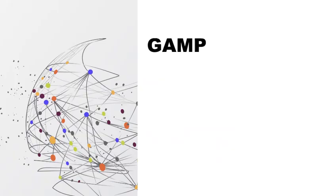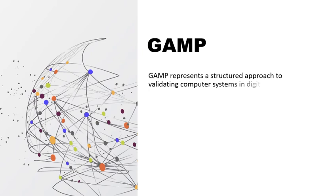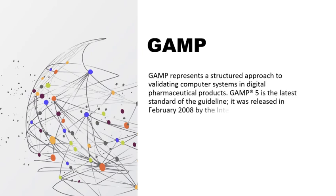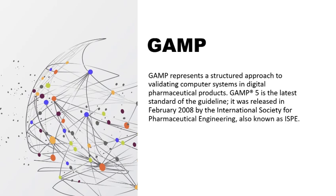First, we will discuss what is GAMP. GAMP represents a structured approach to validating computer systems in pharmaceutical products. GAMP5 is the latest standard of the guidance and it was released in February 2008 by the International Society for Pharmaceutical Engineering, which is also known as ISPE. Whenever we procure an automated system in the pharmaceutical industry, we must validate those systems prior to use in the production environment.